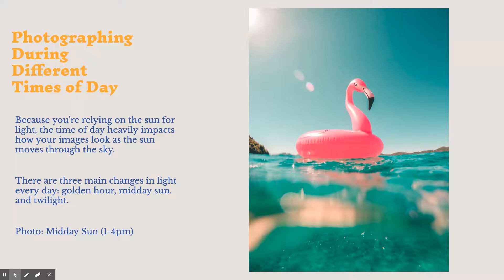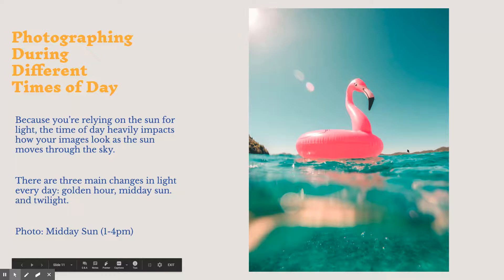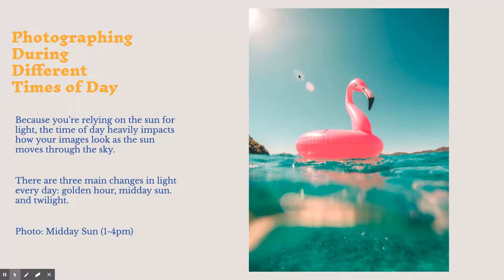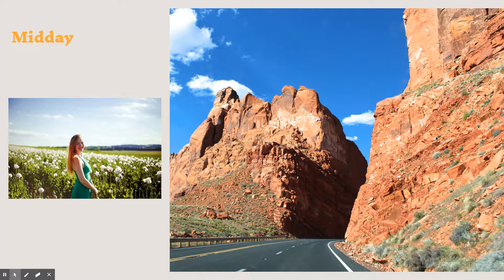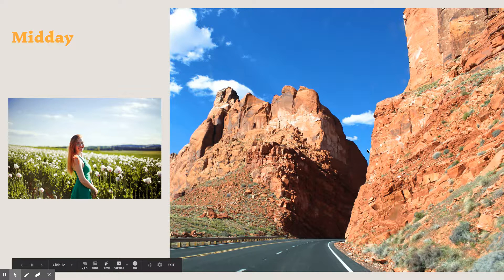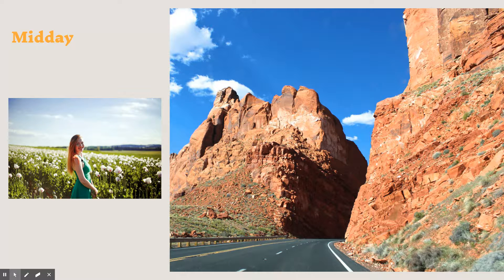Another example: the flamingo is completely in focus, well lit. The sun is directly above or beside it. You can see the foreground, subject, and background during very sunny days. Another mid-day shot — harsh shadows, but you can still see the entire landscape in focus. Again, harsh shadows on her face, great highlights on her face, and the background is completely well lit all around her.